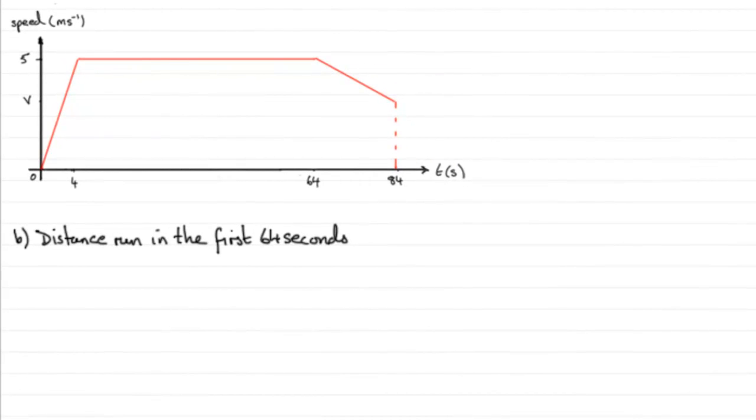Now for part B, we're asked to work out the distance run in the first 64 seconds. To do this, we need to work out the area under the graph up to the 64 seconds. If I section this off up to here, we're looking at the area of this shape here.